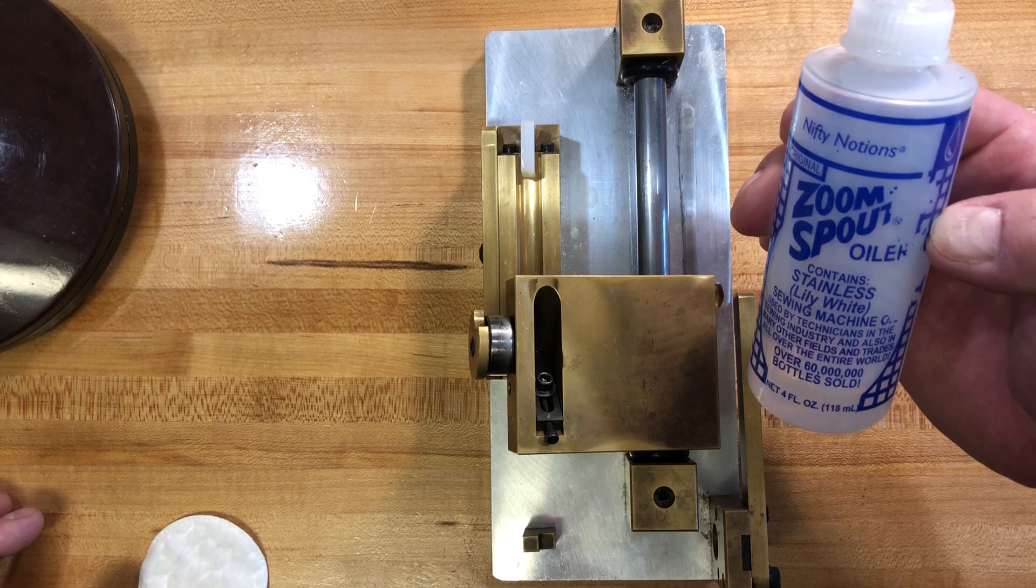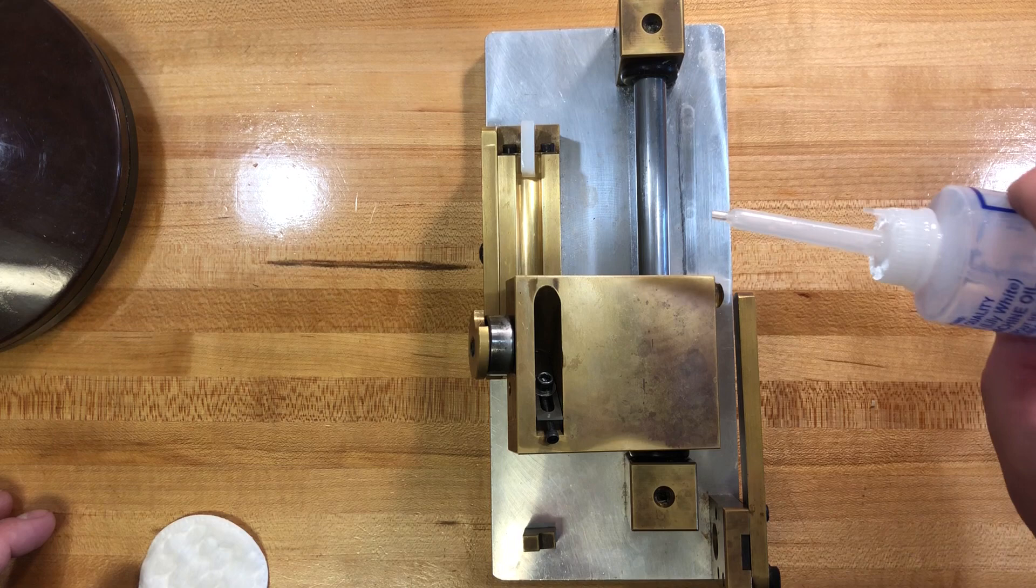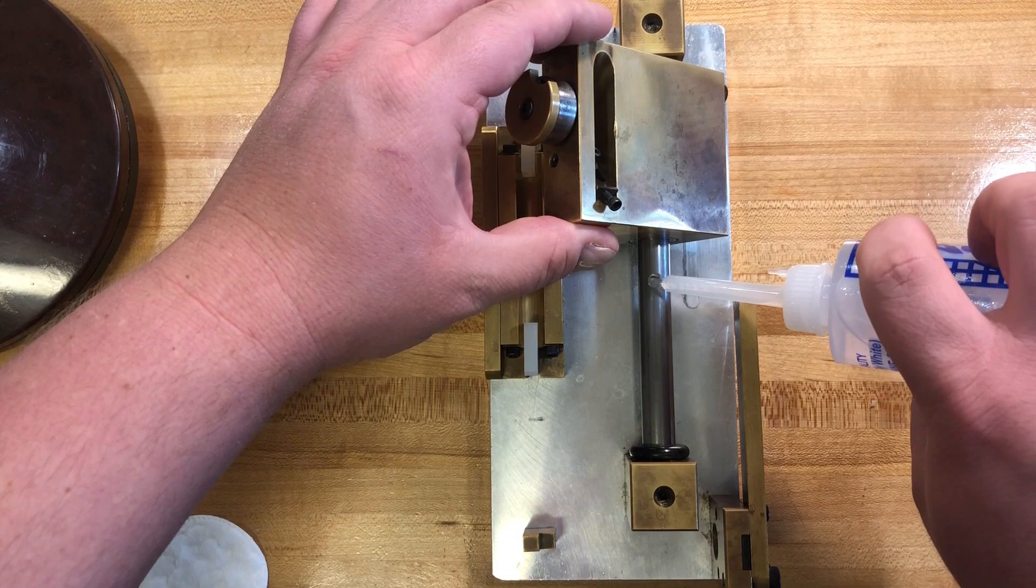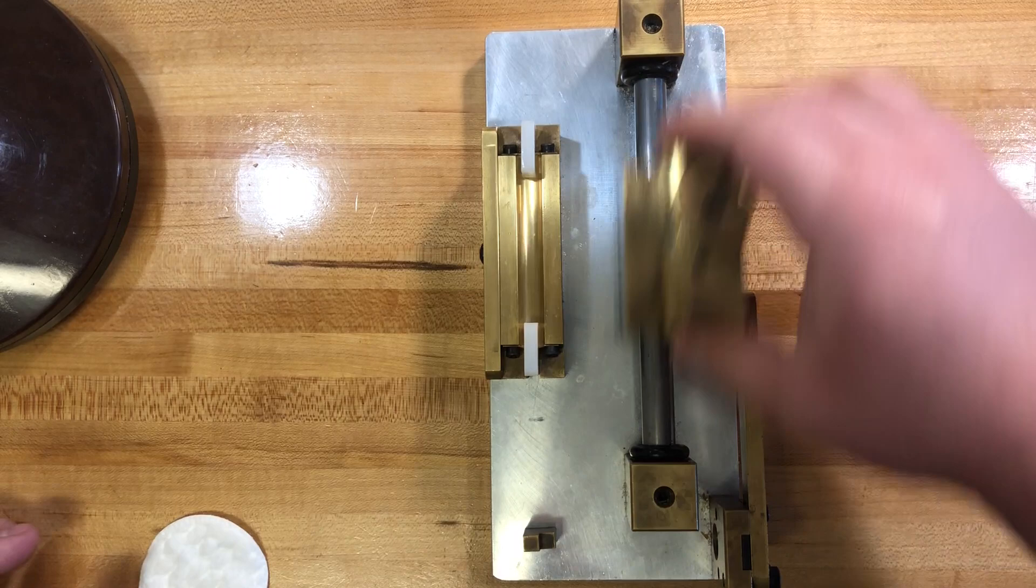I think it's fairly non-toxic too, which is nice. So I just put a drop of this here and a drop here. And just move the carriage back and forth to spread that around. And it helps it move really freely.